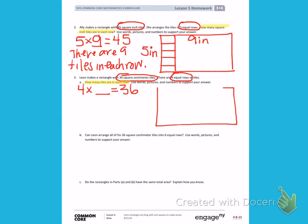There are 4 equal rows. I need to find how many are in each row. I have my rectangle. Here is the demonstration of the rows. I know that I have 4 tiles in each row, giving me 4 centimeters.